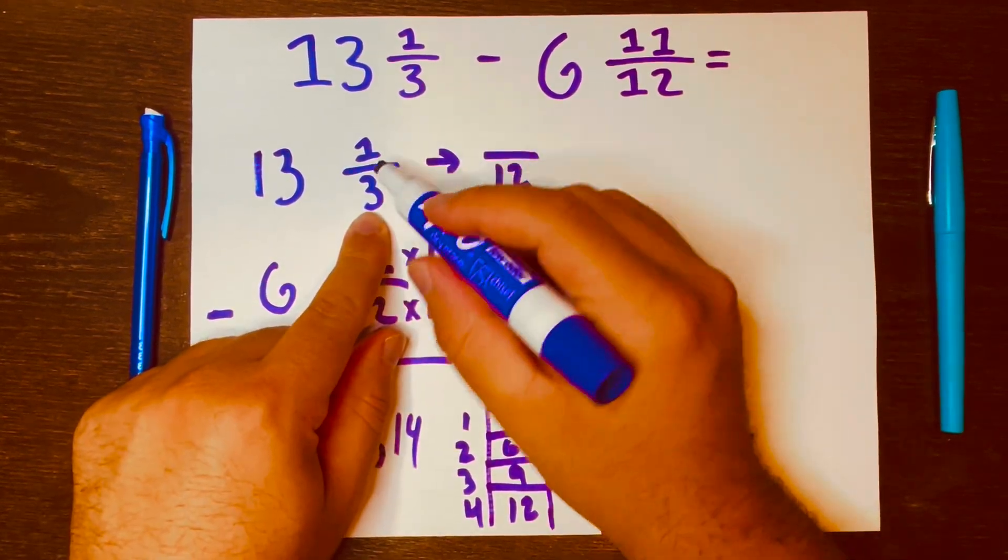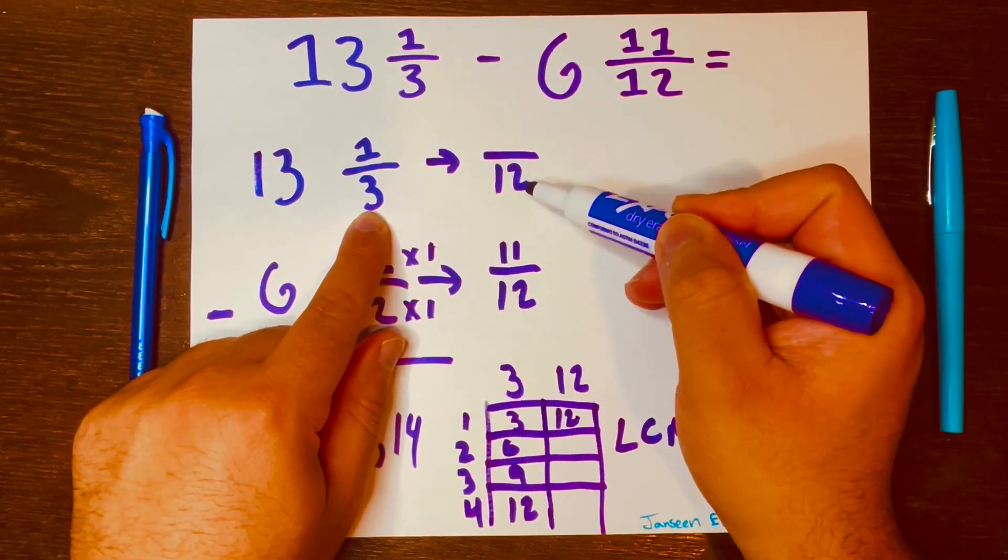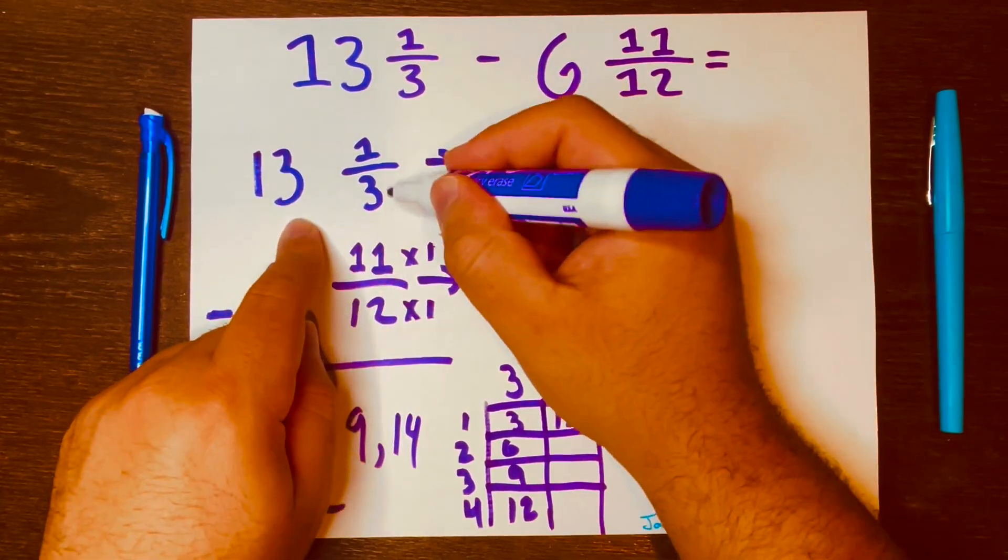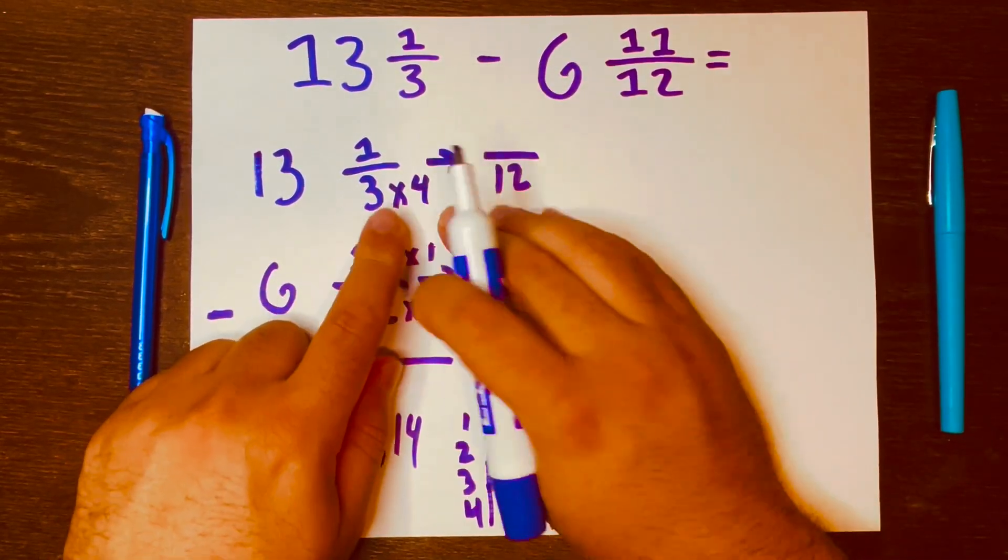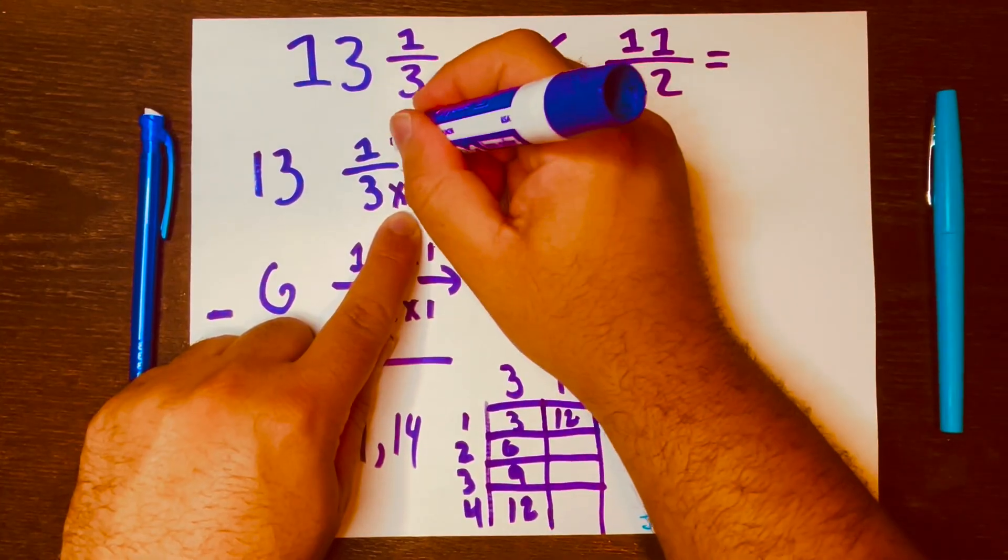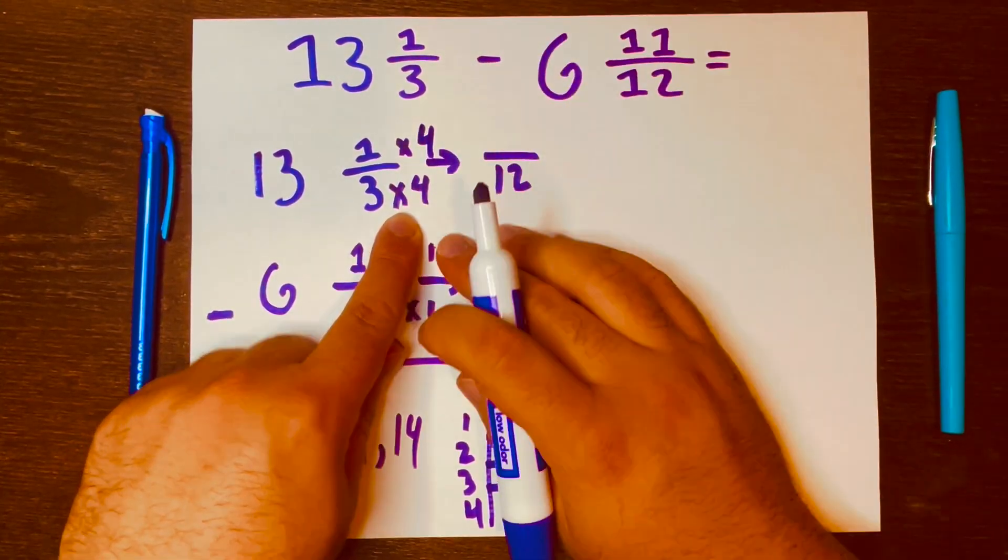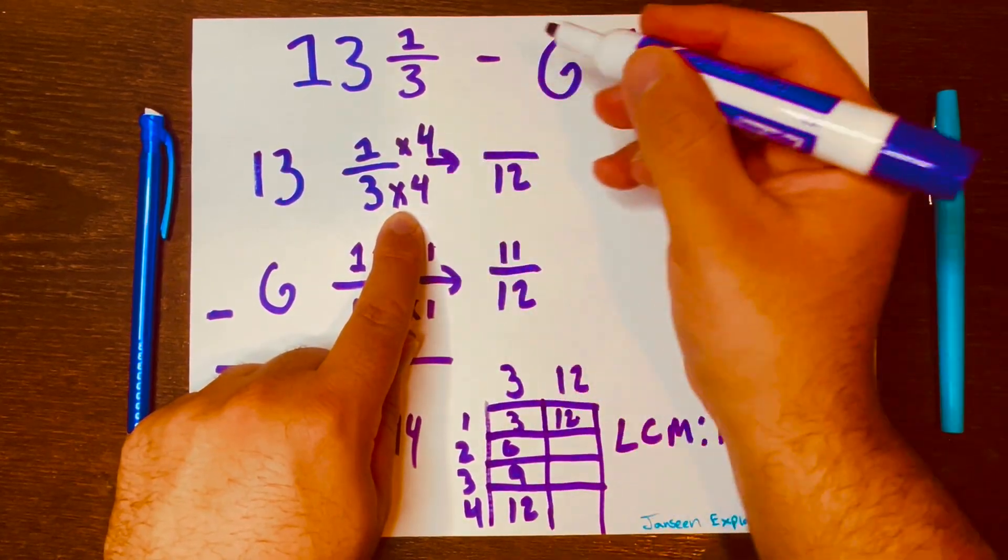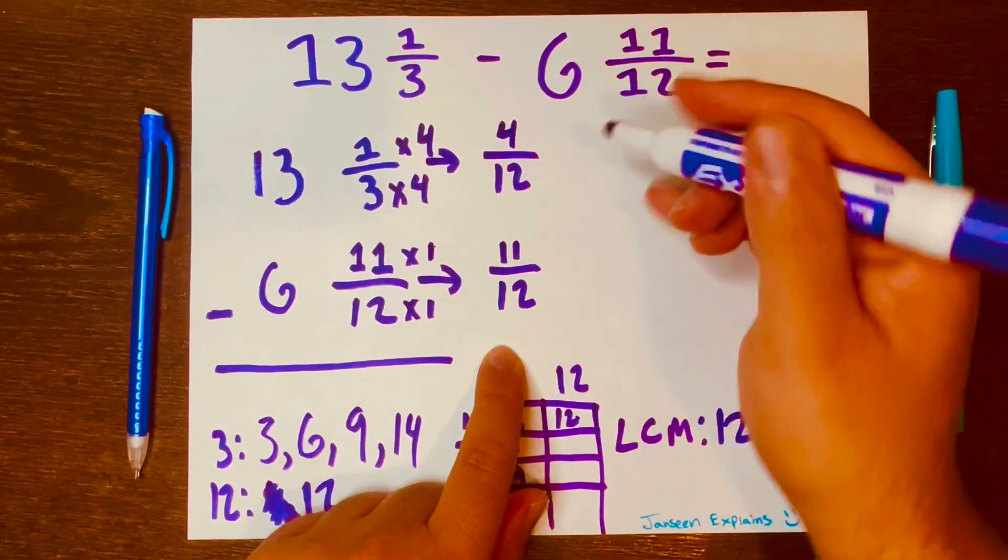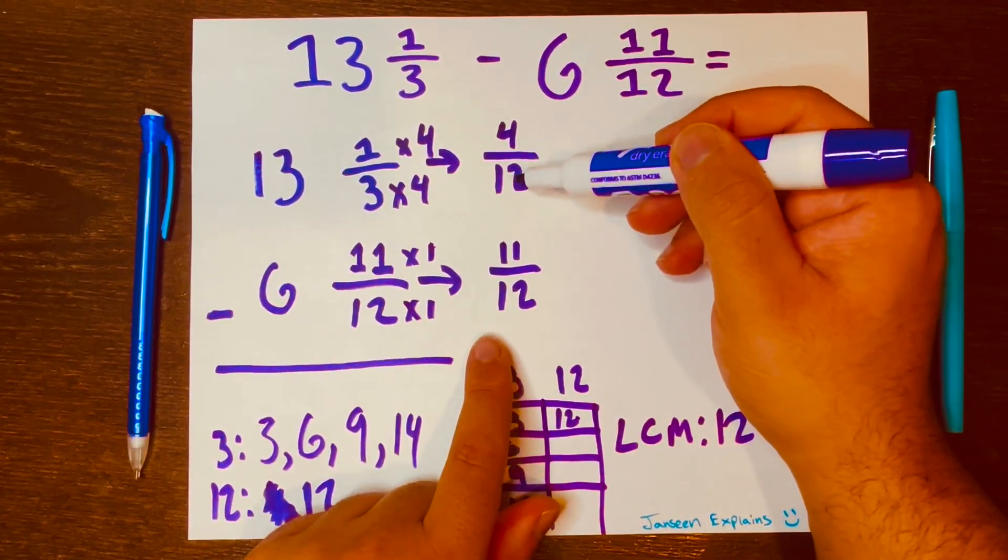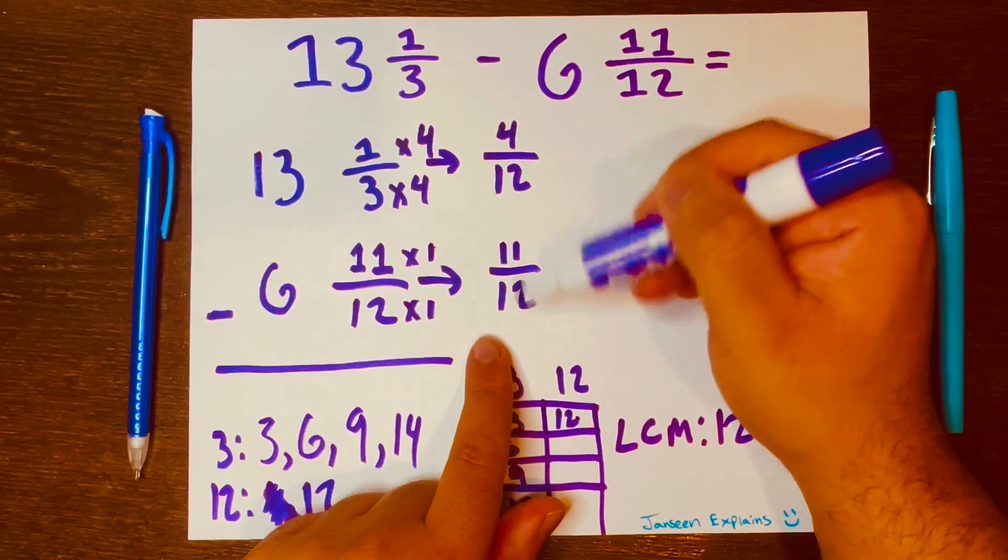And then what you do here, 3 times what gives you 12? Well, 4. So what you do here, you do up here. And so 1 times 4 is 4. And now we can subtract because the denominators are the same.